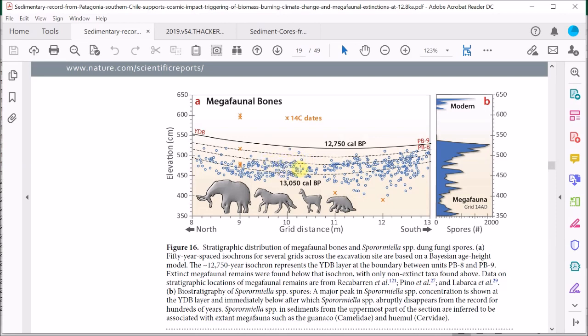Now that seems a bit odd. Why would the number of megafaunal bones at this site suddenly decline several decades before the Younger Dryas event?